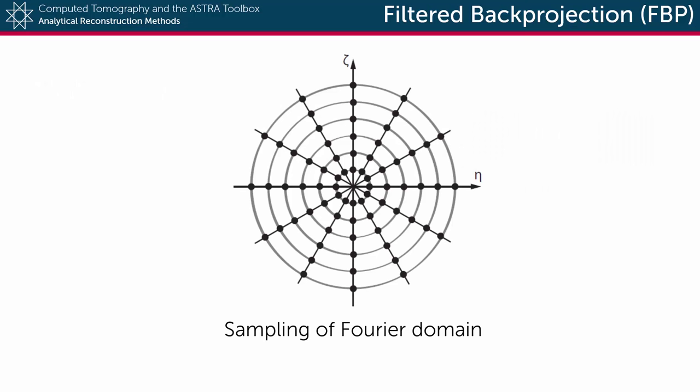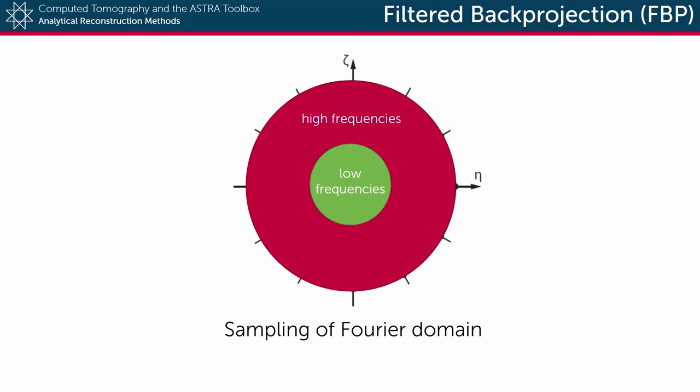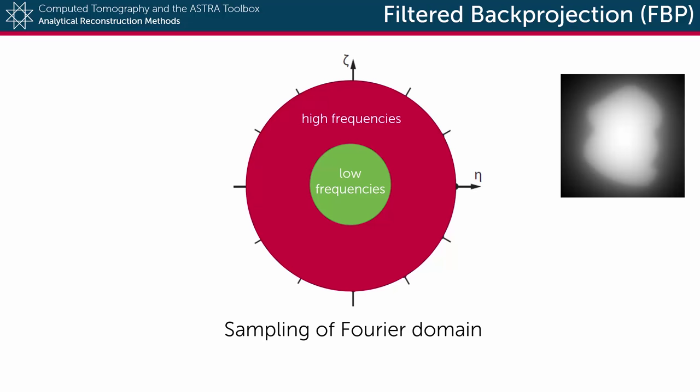Remember the Fourier slice theorem, where we noted that with the tomographic setup of acquiring projections, the Fourier domain of the object is sampled in such a way that the low frequencies are sampled much more densely than the high frequencies. The result of that is exactly why the back projections appear to be so blurry. Because in image processing, the low frequencies take care of the smooth surfaces, and the high frequencies take care of the details and sharp edges. And because the high frequencies are underrepresented here, the resulting back projection is indeed severely unsharp.